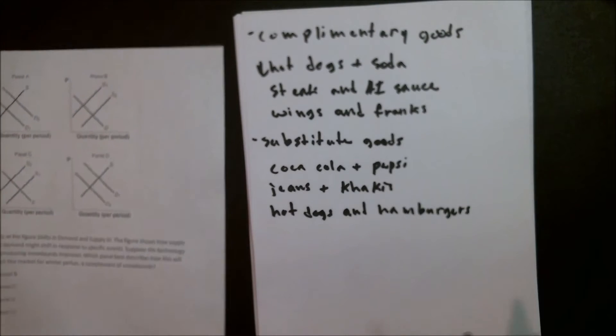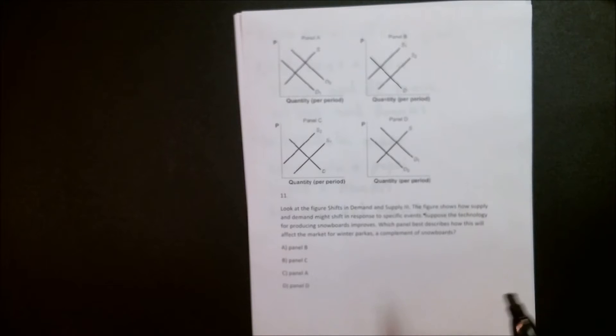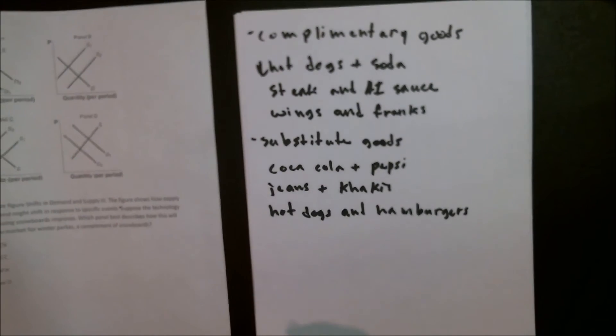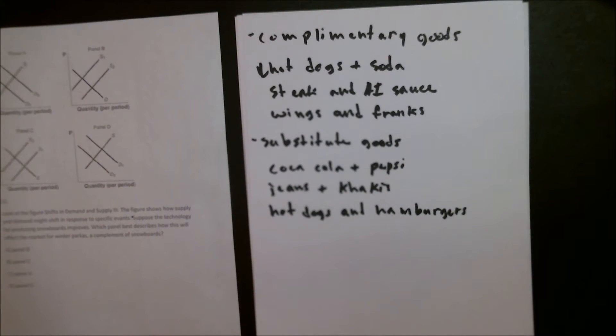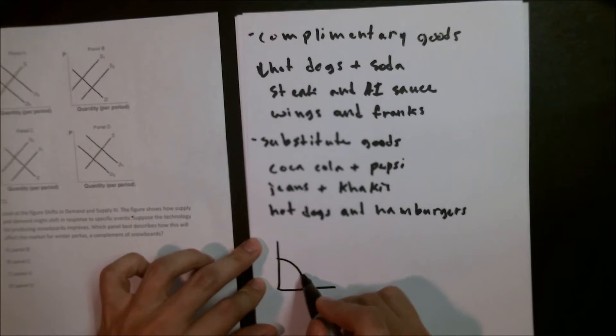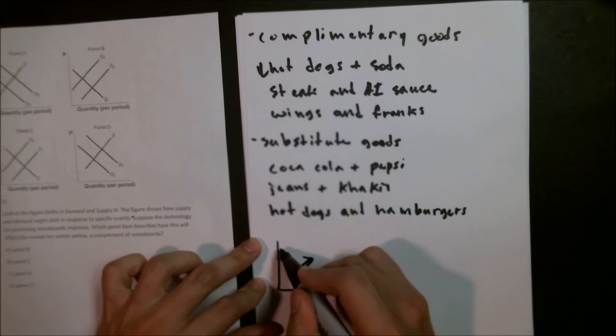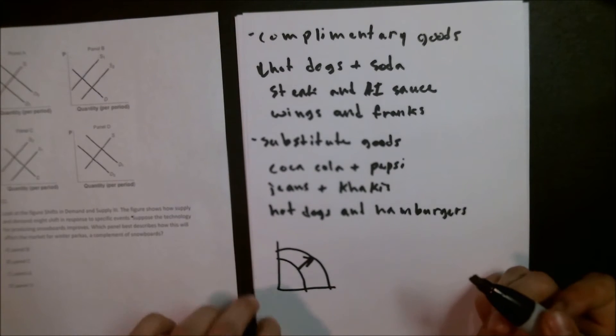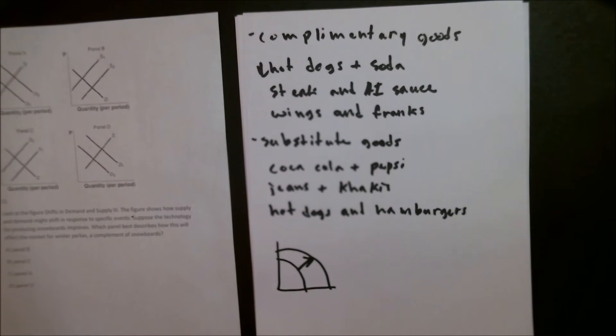Now back to the actual question at hand. This question is asking us, suppose the technology for producing snowboards improves, which panel best describes how this will affect the market for winter parkas? A complement of snowboards. Now we're going to go back and recall what a technological improvement does when you're talking about producing a good. What that's going to do is you go to your production possibility frontier and that is going to bubble it out. What we have here is an increase in the supply of snowboards.